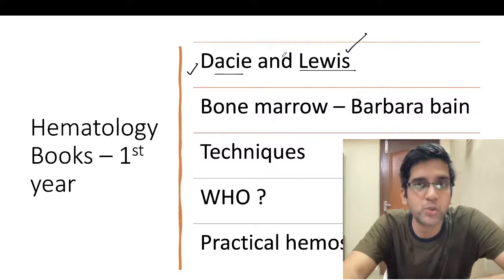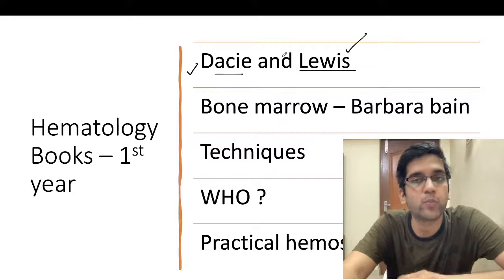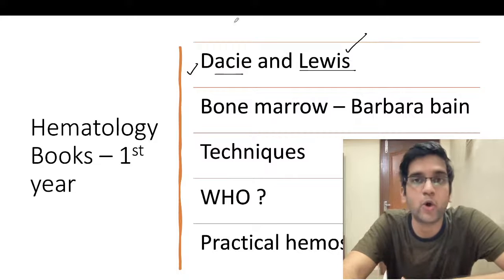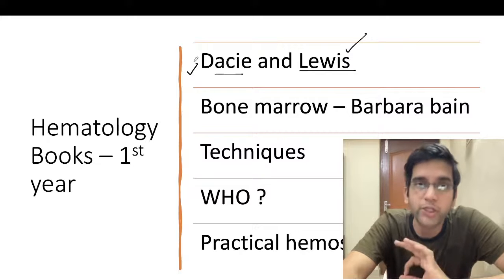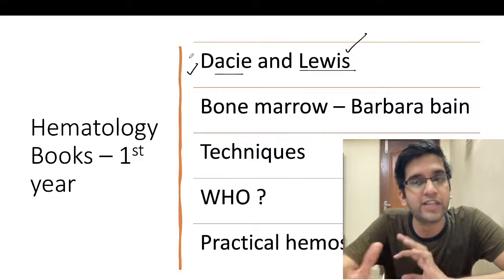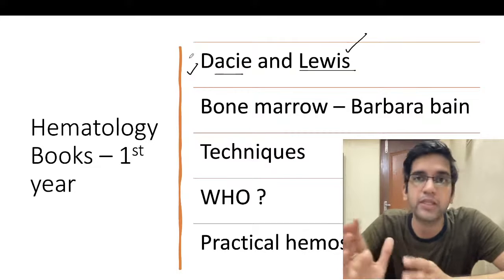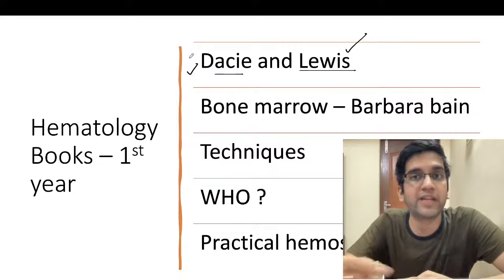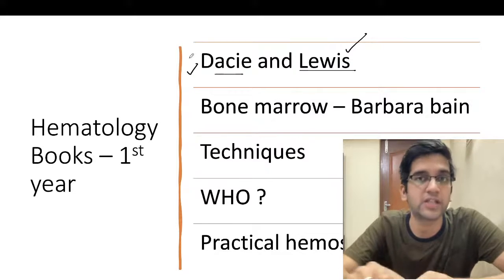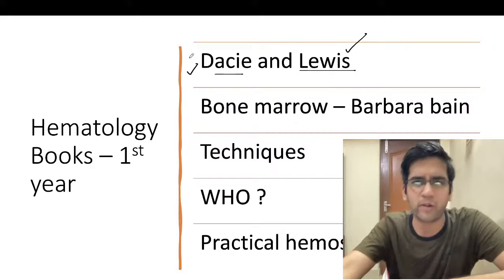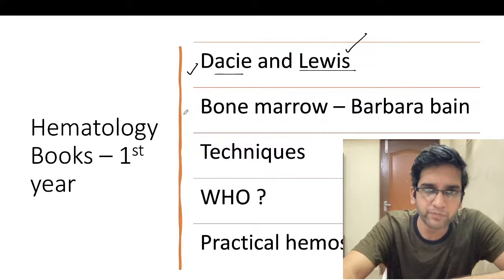Daisy and Lewis will cover your initial microscopy — how neutrophils look, how basophils look, variations in neutrophils, basophils, RBCs, and platelets. That's more than enough for initial CBC. I don't want you reading diseases from Daisy and Lewis — for diseases like sickle cell anemia or thalassemia, I have better books. But for techniques like hemoglobin electrophoresis and HPLC — how to do them — read it from Daisy and Lewis.